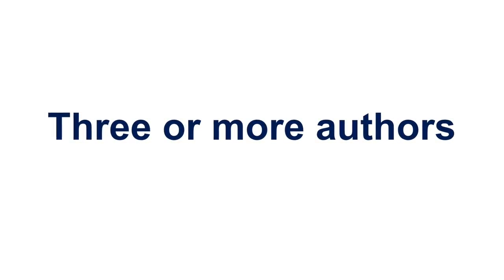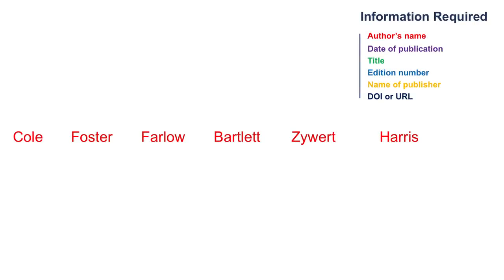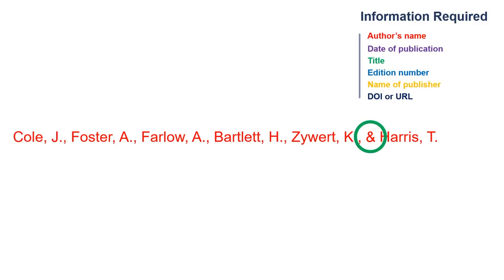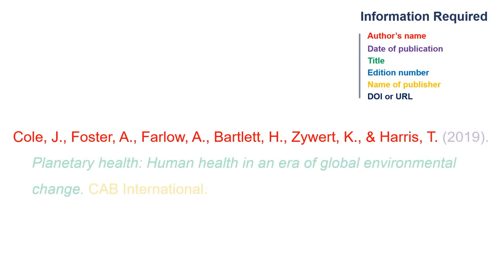For three or more authors, follow each last name with a comma, add the first initial followed by a period, and separate each author name with a comma. Include the ampersand before the last author is listed. You can then proceed to complete the rest of the citation according to the steps outlined earlier in the video.